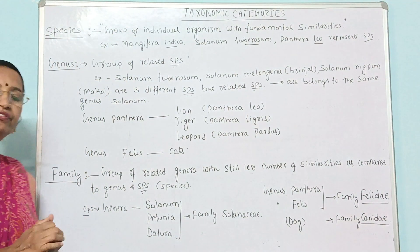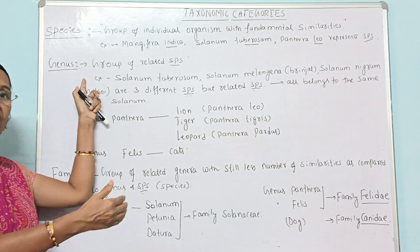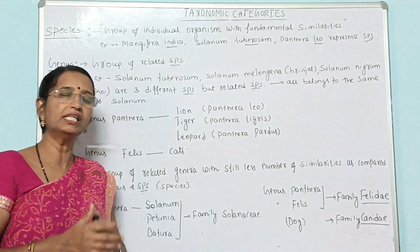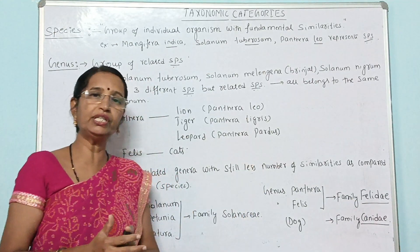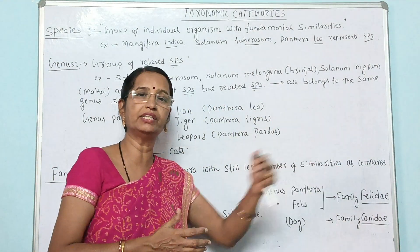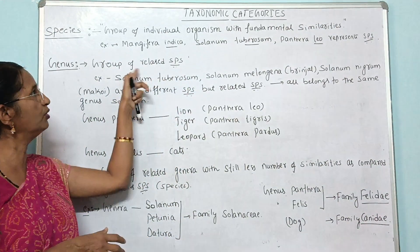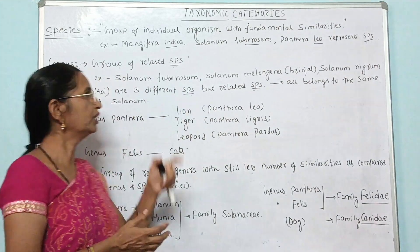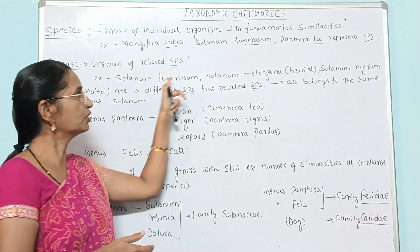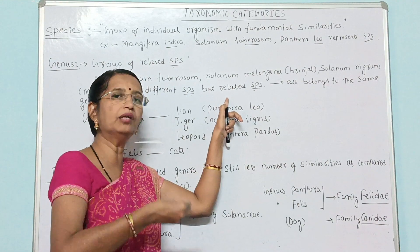Coming to the next level of taxonomic category — that is genus. Genus is the next level of taxon in the classification. Genus can be defined as a group of species, meaning a number of related species aggregate together to form a genus. One genus can be differentiated from another based on characters. For example, Solanum tuberosum, Solanum melongena, and Solanum nigrum are different species under the genus Solanum.